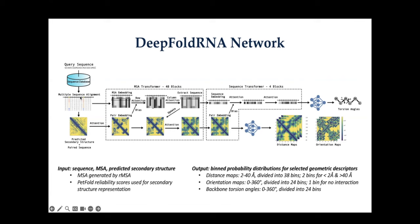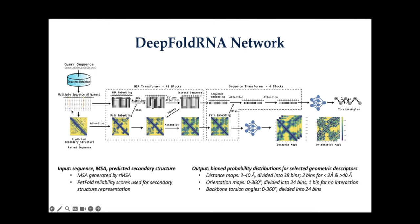In our network we have three different representations: the MSA representation capturing evolutionary information, the pairwise representation capturing pairwise distance relationships, and the sequence representation for our initial query sequence. We process this using a self-attention mechanism. We've seen a shift from convolutional neural networks to self-attention based networks with methods like AlphaFold2 or RoseTTAFold for protein structure prediction, and we applied a similar network for RNA.